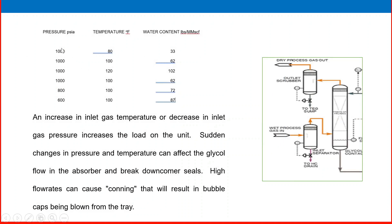We can explain a little more about why gas temperature is important and how the upper and lower values are fixed. This table gives temperature, pressure, and water content. At 1000 psi and 80 degrees Fahrenheit, it is 33 lbs per million standard cubic feet. As temperature increases — 80, 100, 120 degrees Fahrenheit — water content also increases: 33, 62, and 102 lbs per million standard cubic feet correspondingly. So at constant pressure, if temperature is increasing, water content will increase. In another case, if pressure is decreasing from 800 psi to 600 psi with temperature constant, water content also increases from 72 to 87. So if pressure decreases or temperature increases, water content increases, and it should be kept at the optimum fixed value.